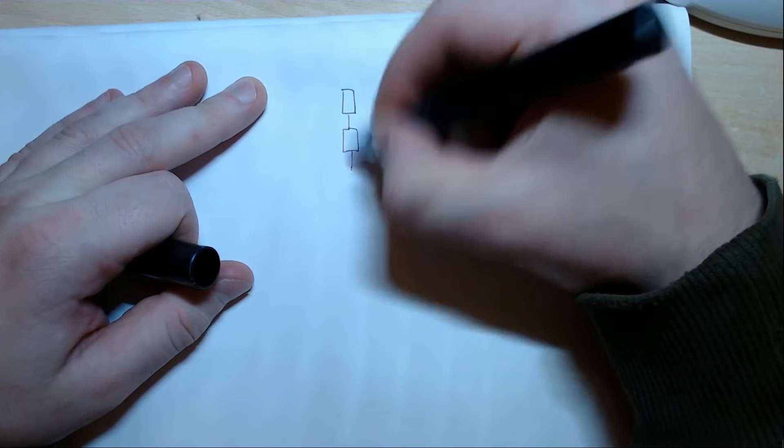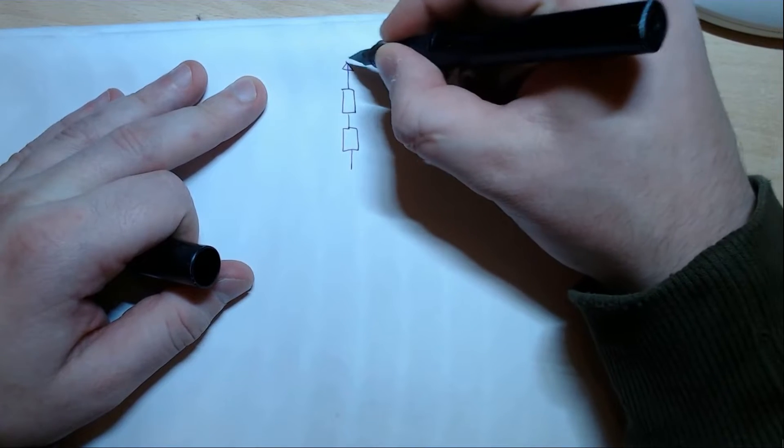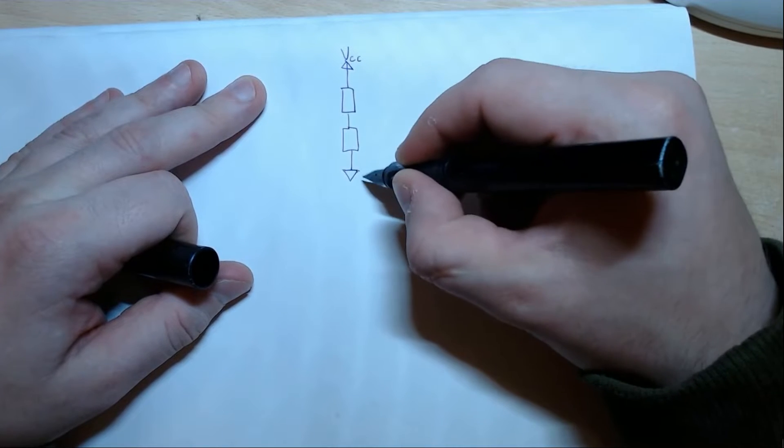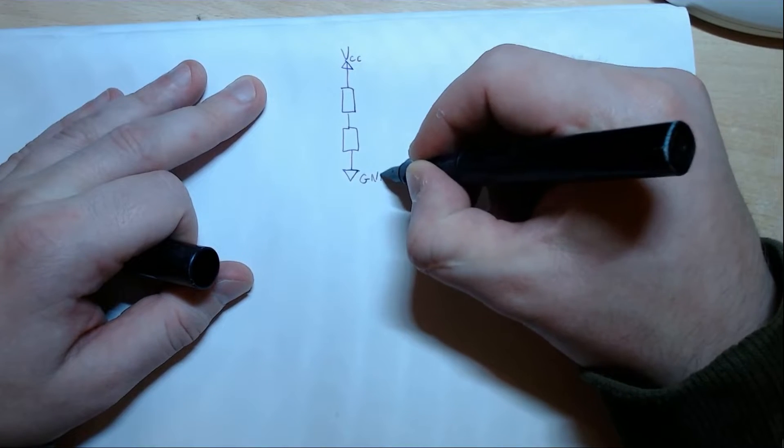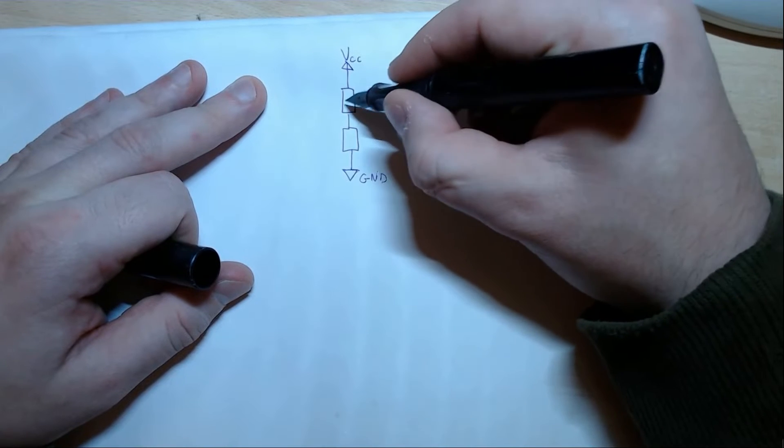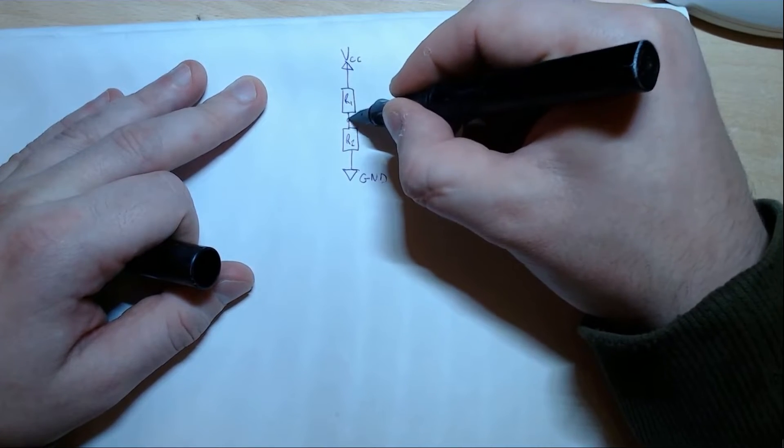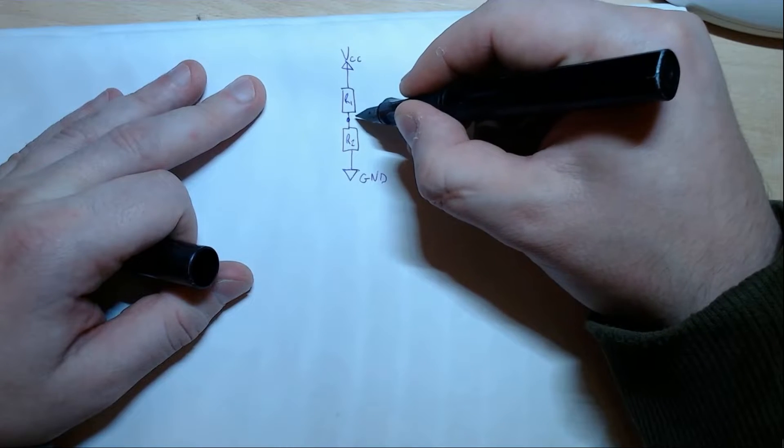We've got a resistor and a resistor forming a potential divider. This is VCC. Let's call this ground for now. Ground is good. Let's call this R1, let's call this R2, and then we have a central point here. Let's call this VX.